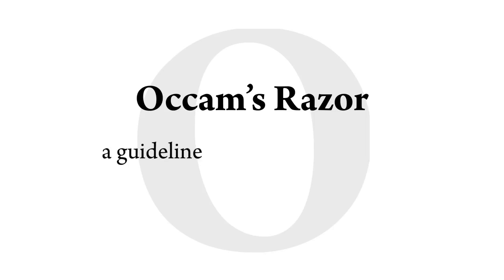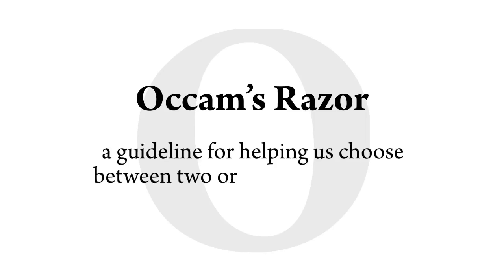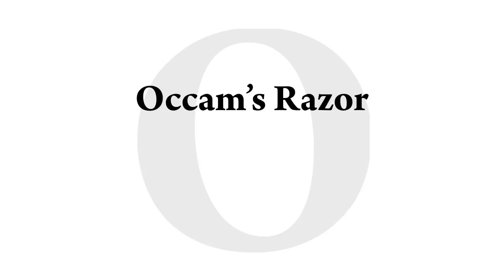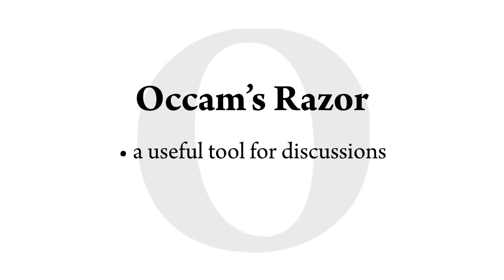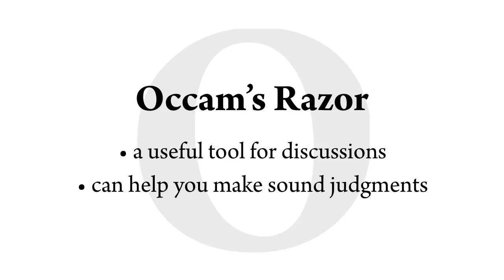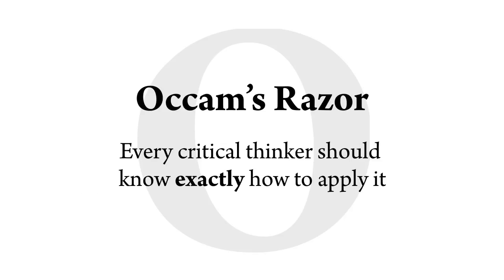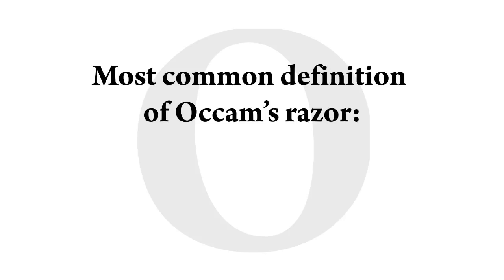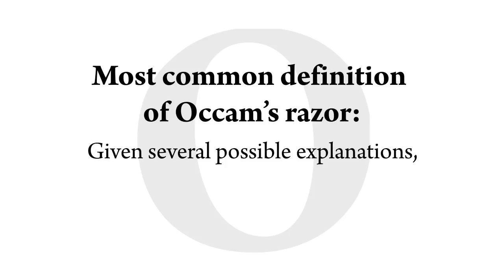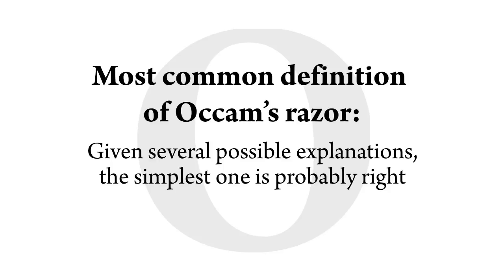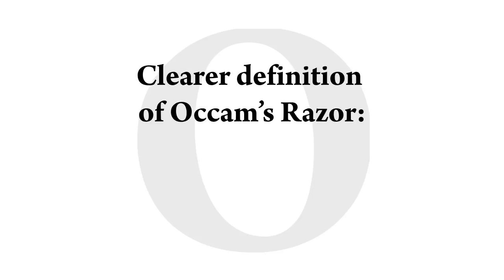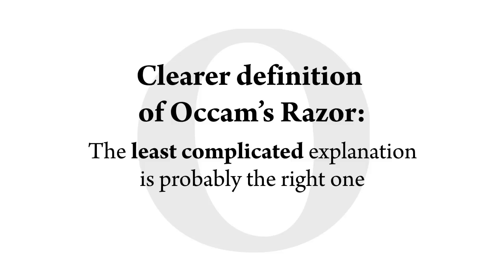Occam's Razor is a guideline for helping us choose between two or more explanations for some event or phenomenon. It's a very helpful tool that you can use in discussions and just in making sound judgments about the world around you. Every critical thinker should know about Occam's Razor and exactly how to apply it. The most common definition is that given several possible explanations for something, the simplest one is probably the right one. Occam's Razor is about the least complicated explanation.